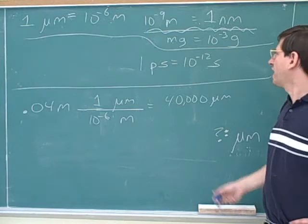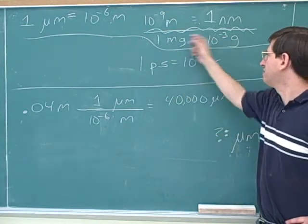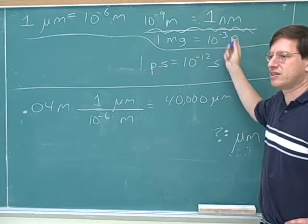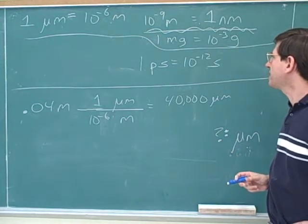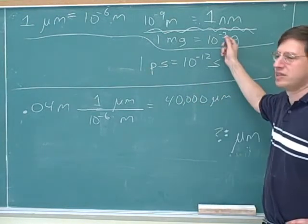For example, instead of saying that one milligram is 10 to the negative three grams, you could say there's a thousand milligrams in a gram. Those are two ways of saying the same thing. We didn't say that because that's not what the table is designed to say. But if that was apparent to you, you could have just used that.